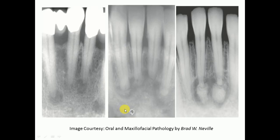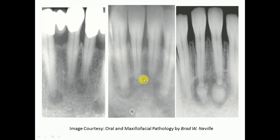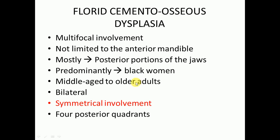Here we can see the radiolucent areas present at the periapical areas of the teeth in the anterior part of the mandible. Then it is converted into mixed lesions, and then into the mature lesion which is radiopaque with radiolucent boundaries. Now we will discuss the third pattern of cemento-osseous dysplasia, which is florid cemento-osseous dysplasia.